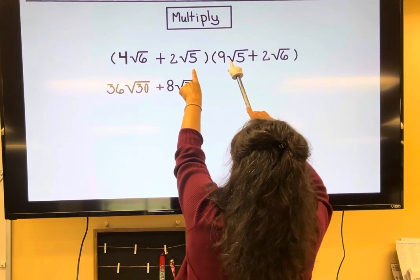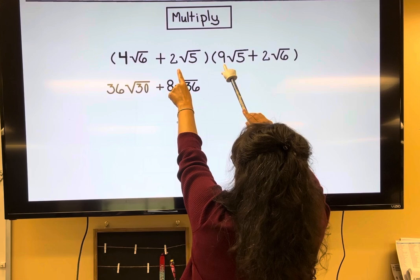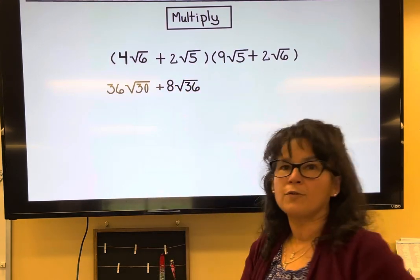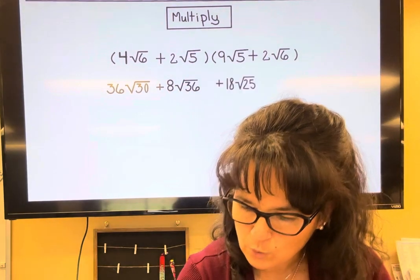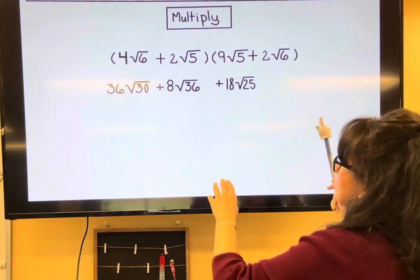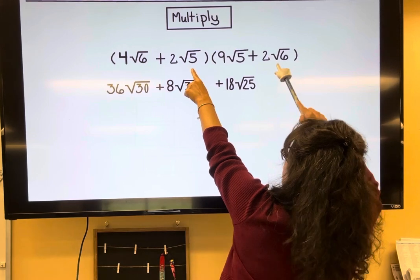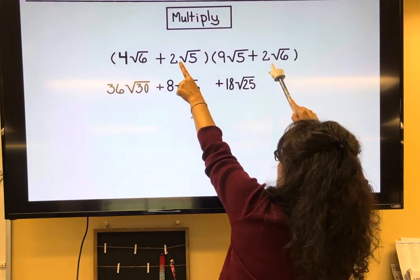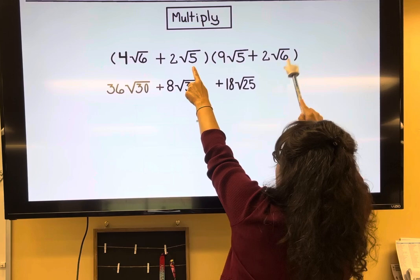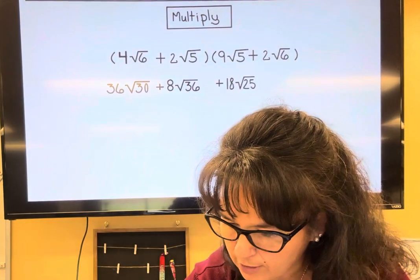For the Inner terms: 2 times 9 is 18, and root five times root five is root 25. For the Last terms: 2 times 1 is... two times two is four, and root five times root six is root 30.